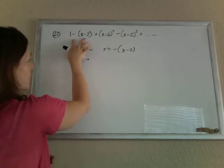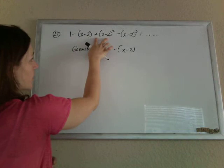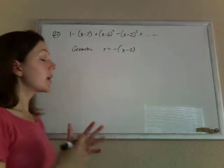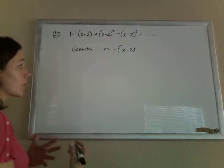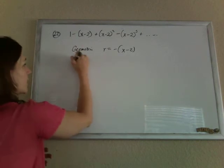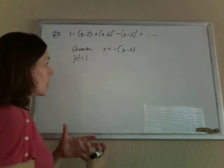1 times negative x minus 2, times another negative x minus 2, and so on. So we know any geometric sequence will converge only if the common ratio is less than 1.